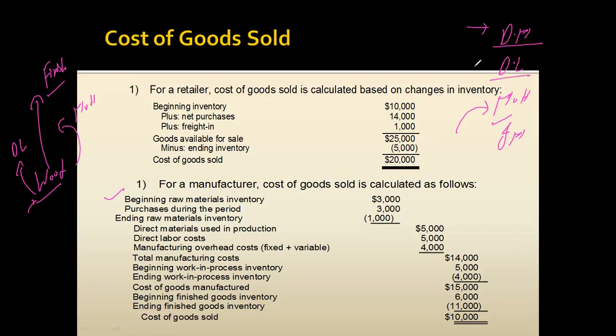Similarly, direct labor refers to workers directly working on the product whose wages or salaries are traceable on a per unit basis. A supervisor overseeing all labor in the department would be indirect labor, because the supervisor's salary is not traceable on a per unit basis. Manufacturing overhead includes different kinds of indirect costs such as indirect labor, utilities, depreciation, insurance, and rent — there can be a long list.